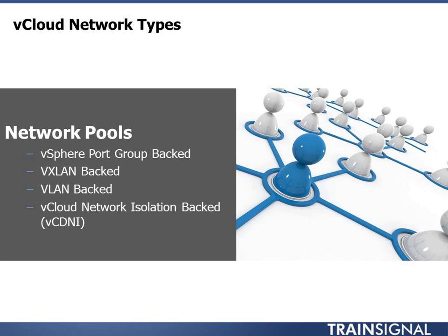Moving to the next type of vCloud networking, we have network pools. Network pools are really how we decide how we define these different types of networks that will be used by the organizations, vApps, and things like that. It pretty much boils down to four different types of network pools — it used to be three, but now with some new network tools, we can provide four different methods for making pools.